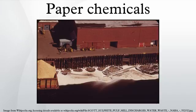Wet strength additives ensure that paper retains its strength when it gets wet. This is especially important in tissue paper. Chemicals typically used for this purpose include epichlorohydrin, melamine, urea formaldehyde, and polyamines. These substances polymerize in the paper and result in the construction of a strengthening network.